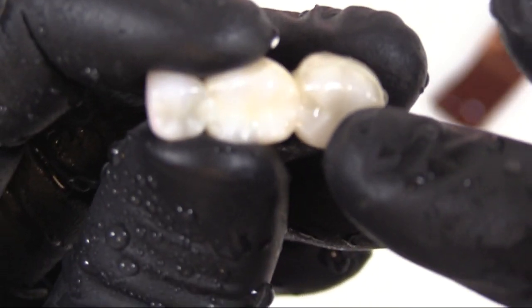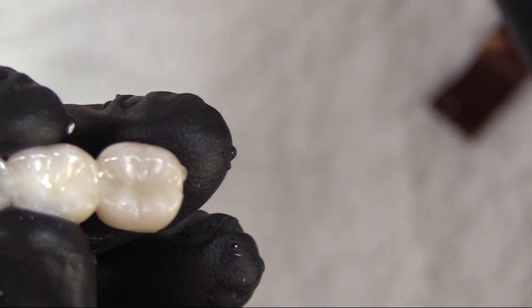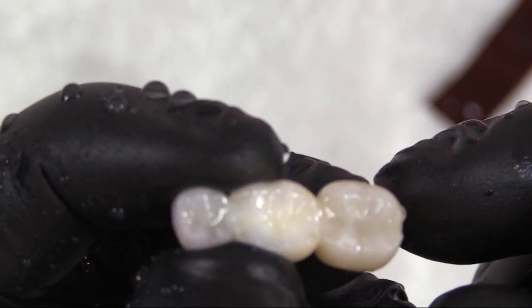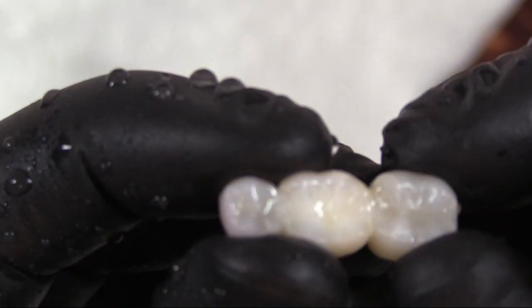That's how you would adjust the interproximal. Once it's fully seated, you'll do the same thing with the acufilm along the occlusal. Whatever your occlusal scheme is, you would adjust accordingly, and most likely not have to use the blue ones and just solely use the green medium grit followed by the orange fine grit.